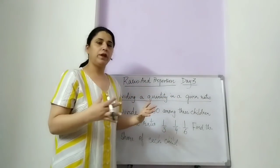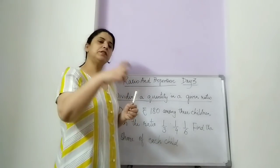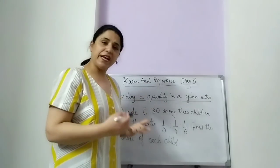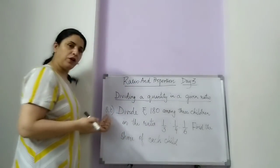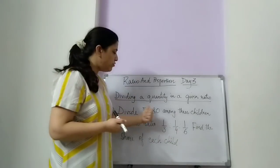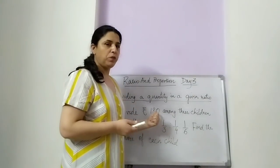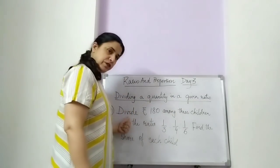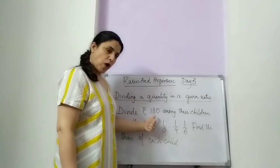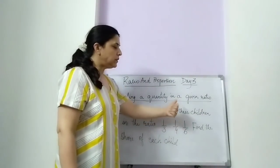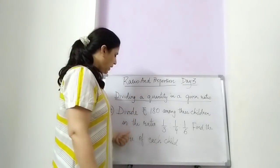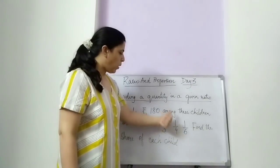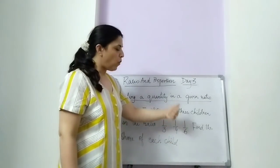Now suppose we are given that this is a quantity and you need to divide it in this ratio. Find the share of each child. Like question number 10 in your book, which says: divide rupees 180 among 3 children in the ratio 1/3 is to 1/4 is to 1/6. Please note down this question in your fair note book.